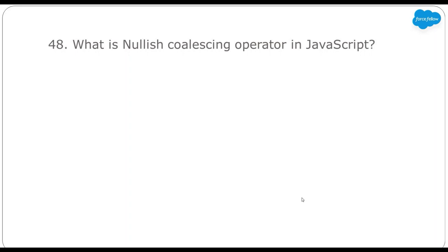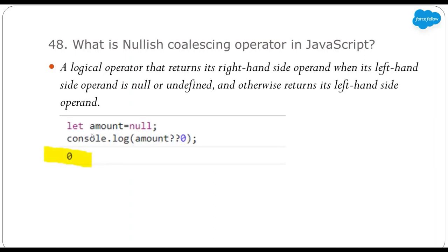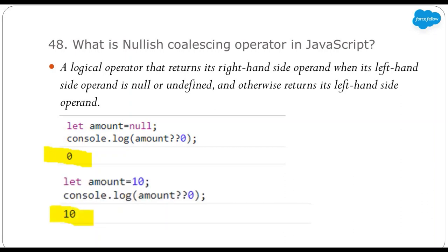Next: what is the nullish coalescing operator (??) in JavaScript? According to the MDN definition, it is a logical operator that returns its right-hand side operand when the left-hand side operand is null or undefined, otherwise it returns the left-hand side operand. For example, if a variable amount is null and you write amount ?? 0, the output will be 0. But if amount is 10, the output will be 10. So: if the left-side value is null or undefined, it returns the right-side value; otherwise it returns the left-side value.